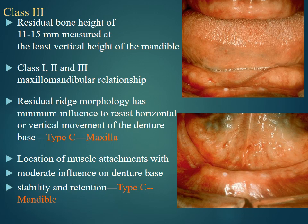The residual bone height is 11 to 15 mm measured at the least vertical height of the mandible. The maxillomandibular relation may be Class 1, 2, or 3. The residual ridge morphology has minimum influence to resist horizontal or vertical movement of the denture base, which is Type C of the maxilla. Location of muscle attachments with moderate influence on denture base stability and retention is Type C of the mandible.